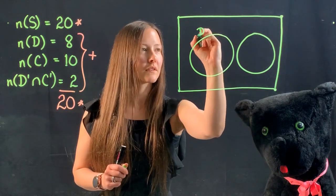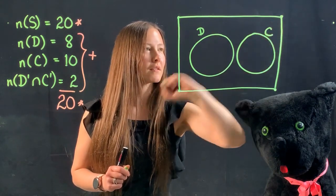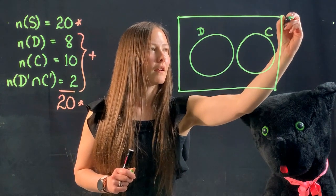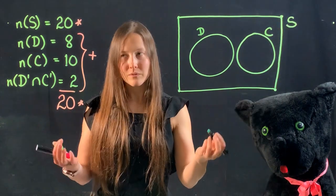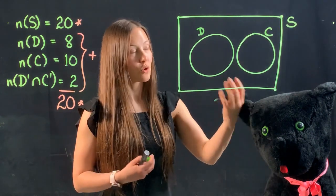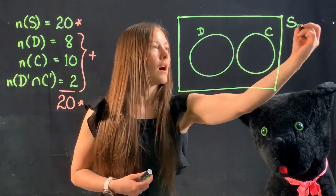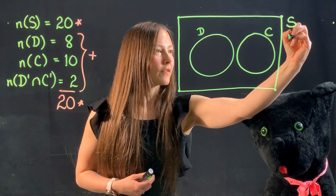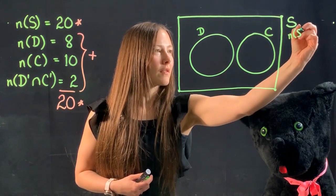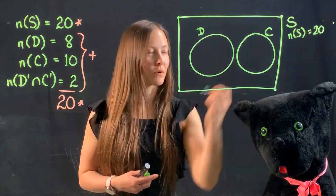So dogs, cats, and then S, which in this case is representing the total elements in this entire box. I'm just going to give myself a little reference here. That reminds me that there should be 20 in total.